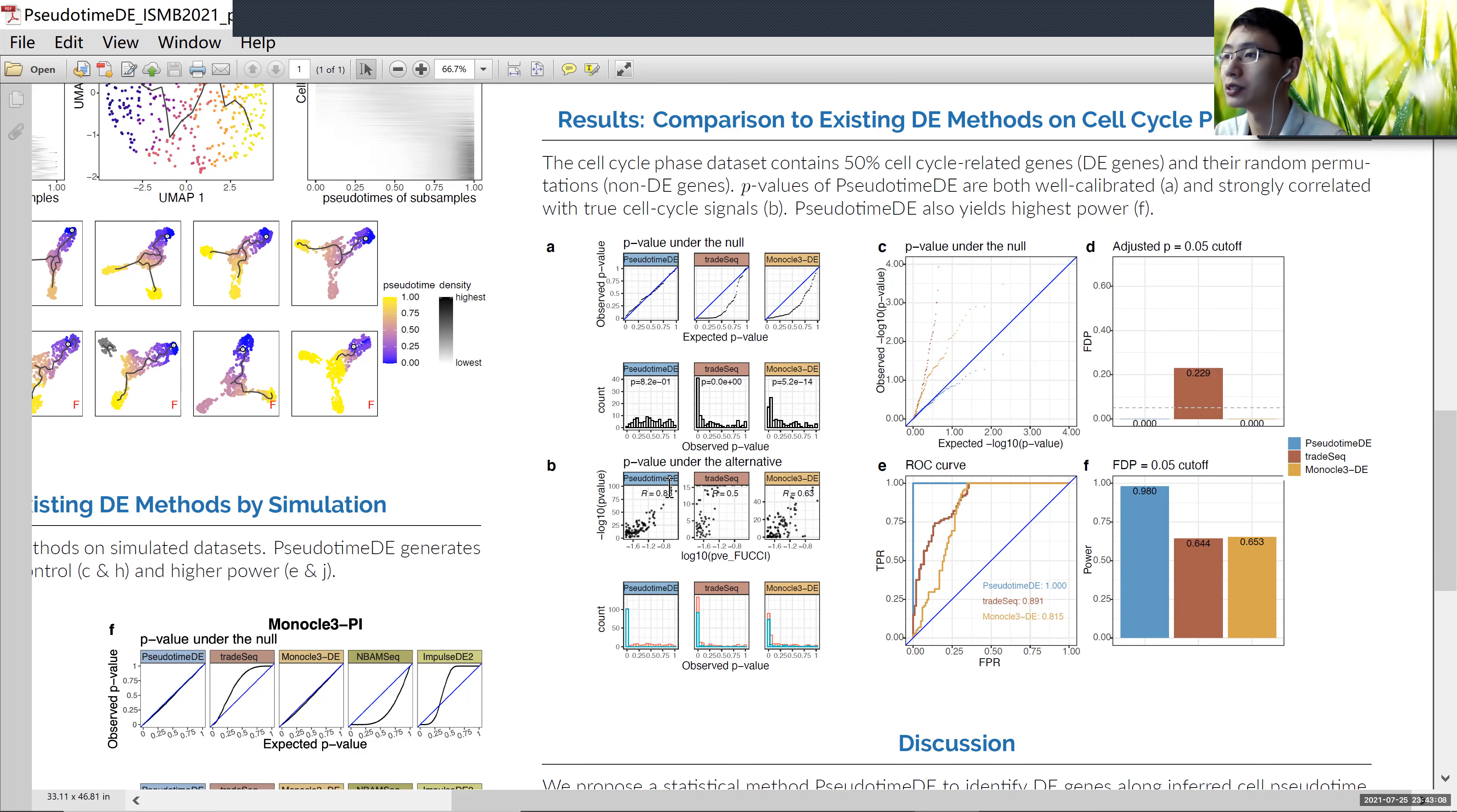Also when we compare the p-values under the alternative, we can see they show a very strong correlation with the true DE signal, which was estimated by actual experiments in the original paper. And also PseudotimeDE shows the best FDR control and the highest power.